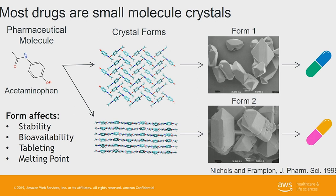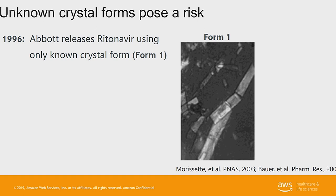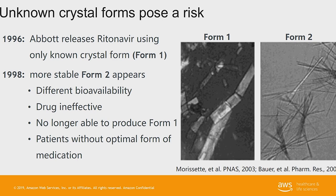For example, Ritonavir in 1996 was one of the very first drugs on the market for HIV, and it really extended the lifespan and healthspan of HIV patients significantly. After the 90s, HIV — at least in certain countries — wasn't as much of a death sentence. But unfortunately, in 1998 a more stable form of the molecule appeared that pharmaceutical developers hadn't recognized when they released the drug in 1996. All of a sudden, this more stable form was the only form that could be made because, like a ripple effect, if one crystal converted, all the other crystals near it in the manufacturing site would also convert. Form 1 was very effective as an HIV medicine; form 2 didn't help patients at all.